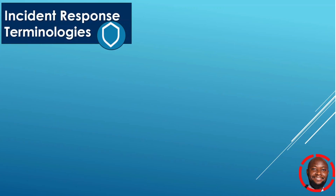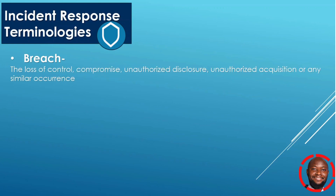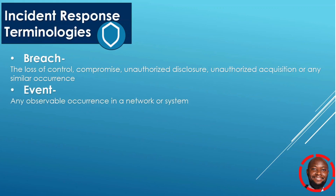Under Domain 2, it's critical to understand some terminologies related to incident response. A breach is the loss of control, compromise, unauthorized disclosure, or unauthorized acquisition within your system or network. An event is any observable occurrence within your network, system, or organization. An exploit is when a particular attack takes advantage of vulnerabilities within your system.